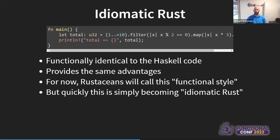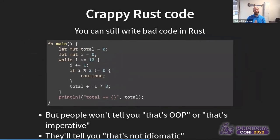By contrast, you could do this same bit of code in Rust the imperative way — the bad way — which is now functionally identical to what we had in the C code. I used a while loop instead of a for loop, but it's the same concept: short-circuiting, mutation, etc. If you write this code in Rust and share it on the Rust subreddit, I'd put quite a bit of money down that someone will critique it and say you shouldn't write it that way. You're doing things the imperative, mutable way — it's not idiomatic Rust.